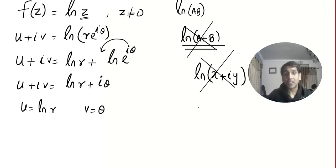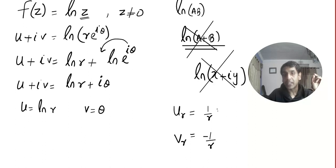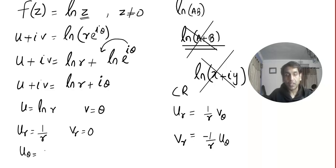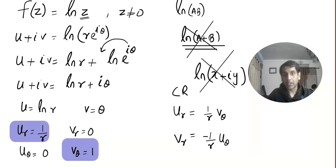Now remember the polar CR equations: u_r = (1/r)·v_θ and v_r = −(1/r)·u_θ. Let me find u_r = 1/r, v_r = 0, u_θ = 0, and v_θ = 1. So u_r = 1/r = (1/r)·v_θ — verified. And v_r = 0 = −(1/r)·u_θ — also verified. That's it.